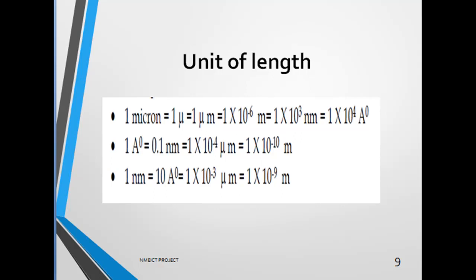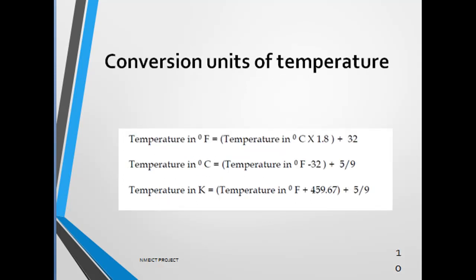Next is conversion unit of temperature. You may be very well aware that temperature can be measured in different units. It may be Fahrenheit, Kelvin or degree Celsius. So we need to convert the temperature in Fahrenheit from degree Celsius. These are the different formulas for the same. To convert degree Celsius into Fahrenheit we need to multiply it by 1.8 then add 32. Similarly different conversions are listed on the slide.